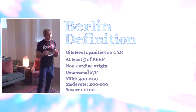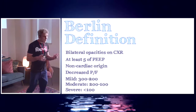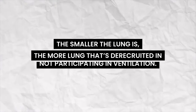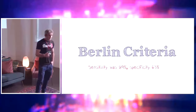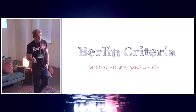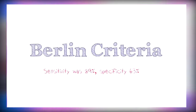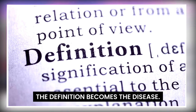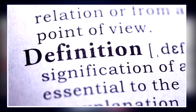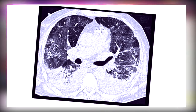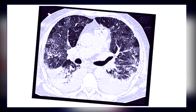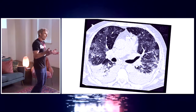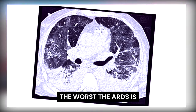The more oxygen you need to maintain an O2 sat or a PaO2, the smaller the lung is — the more lung that's de-recruited and not participating in ventilation. There's a lot of debate on whether this is a good definition of ARDS or not, and overall it's moderate at least for diagnosing the disease. But what the Berlin criteria is really telling you is you've got a big, wet, heavy lung that's not participating in ventilation. The more lung that's wet, heavy, and de-recruited, the worse the ARDS.